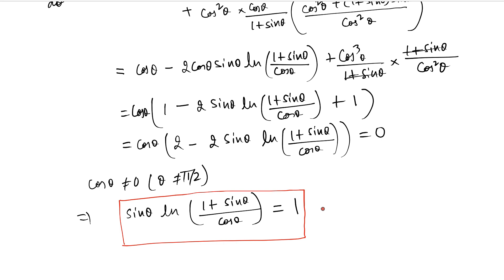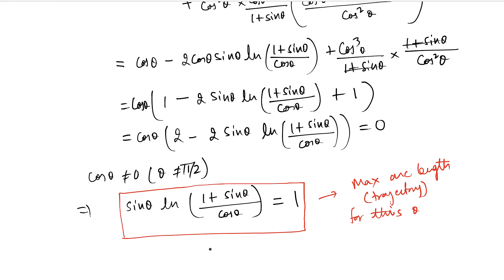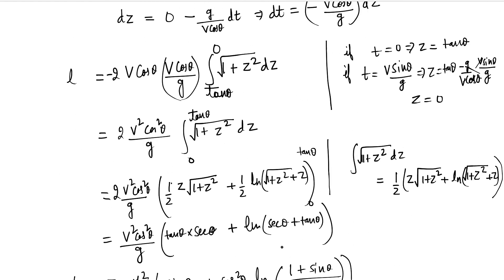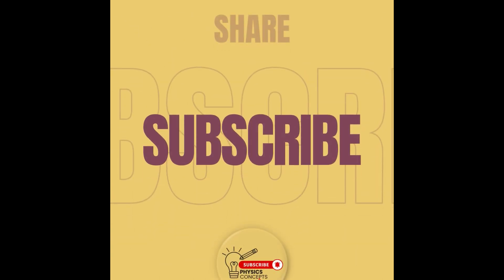This expression gives the angle for maximum trajectory length. You cannot solve this analytically — you must use numerical analysis. The angle we get is approximately 56.5 degrees, which is a bit more than the 45 degrees that gives maximum range. I hope you liked this video. Please subscribe, like, and share with your friends. Thanks for watching!